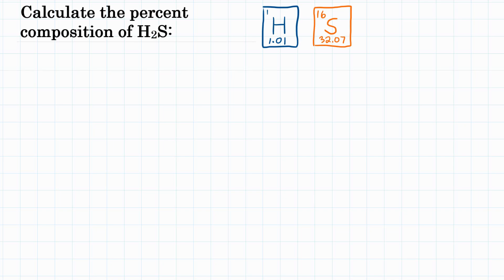Alright everyone, the problem is to calculate the percent composition of H2S. First, we want to get the masses of both elements for this compound — the masses of hydrogen and sulfur.